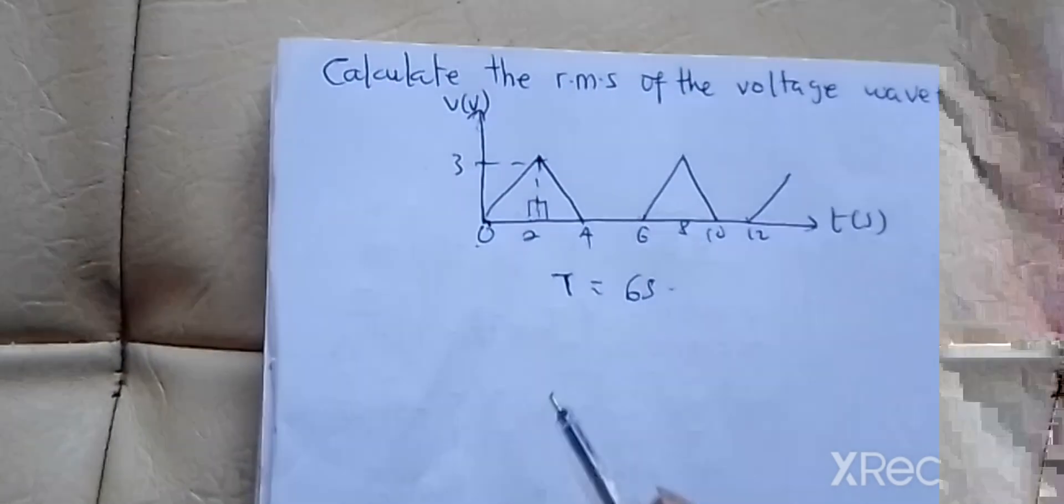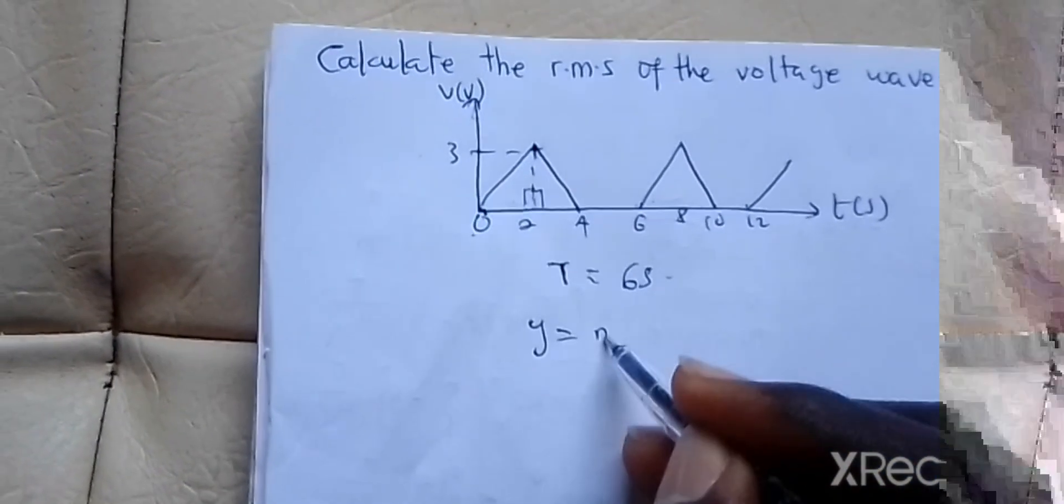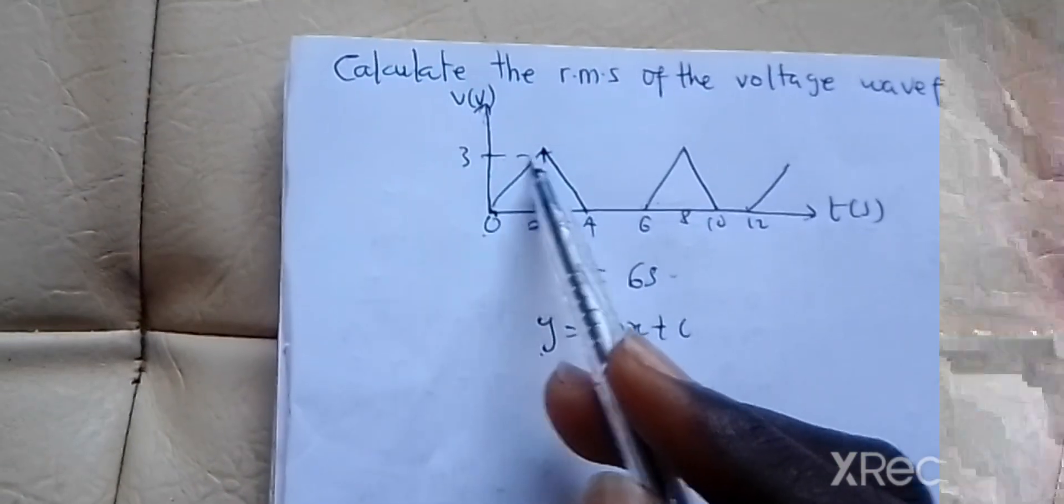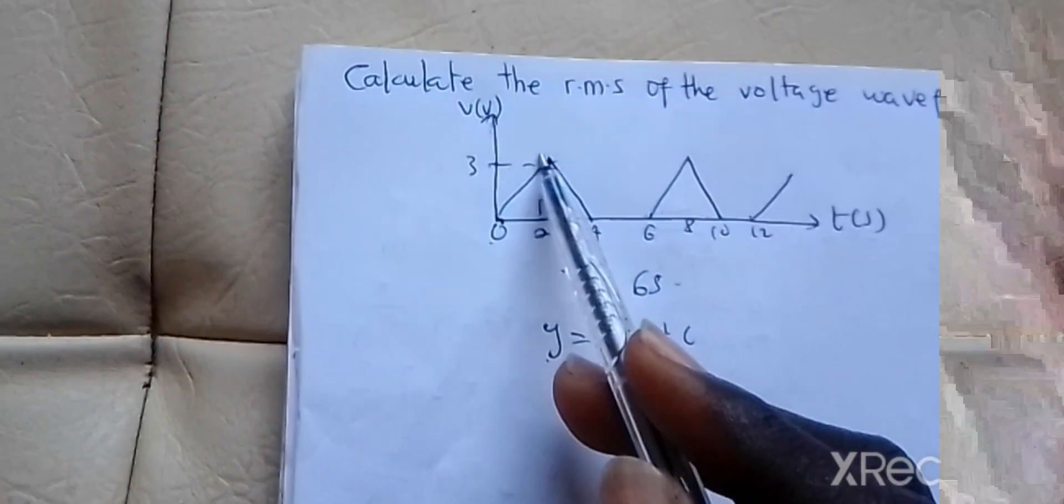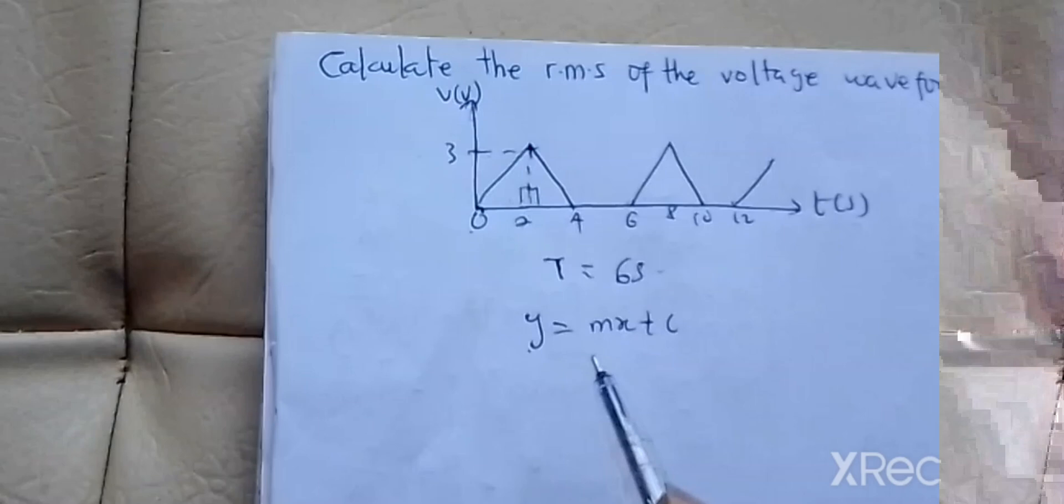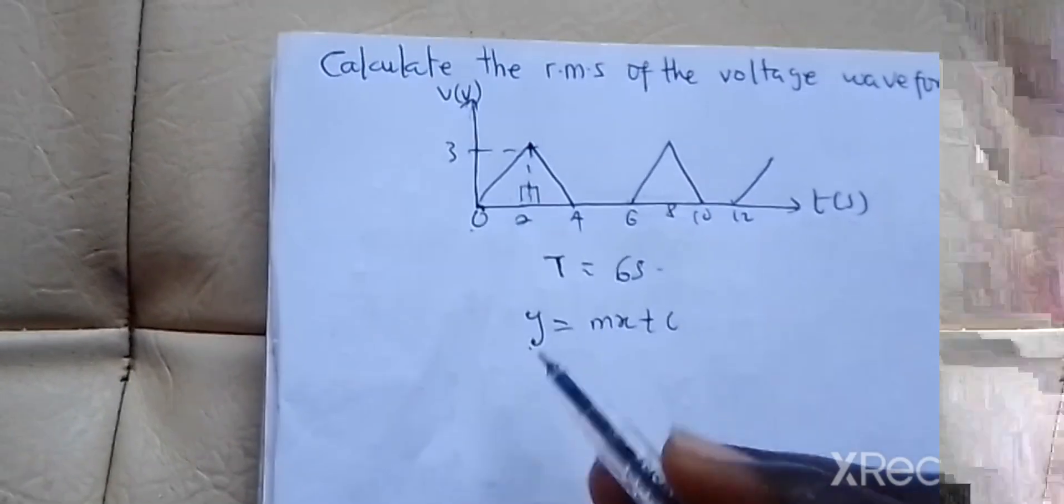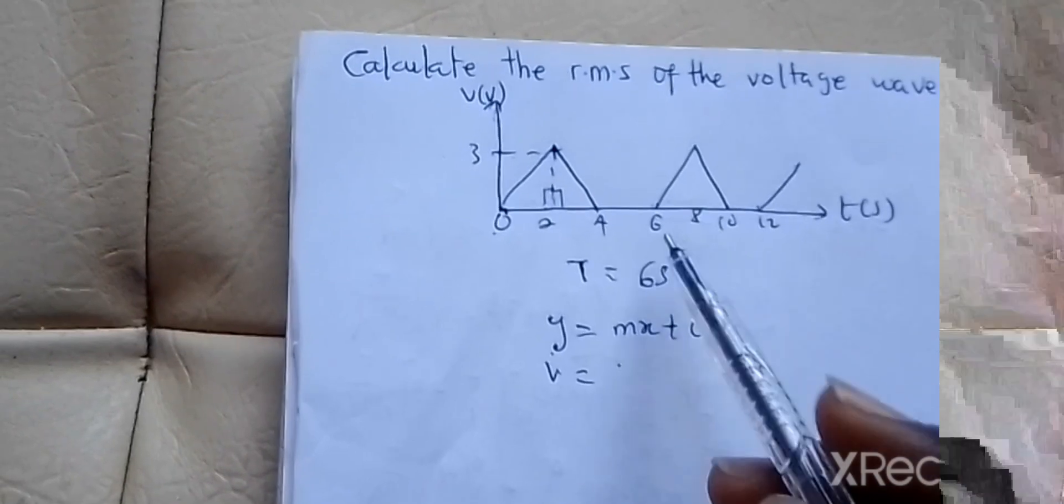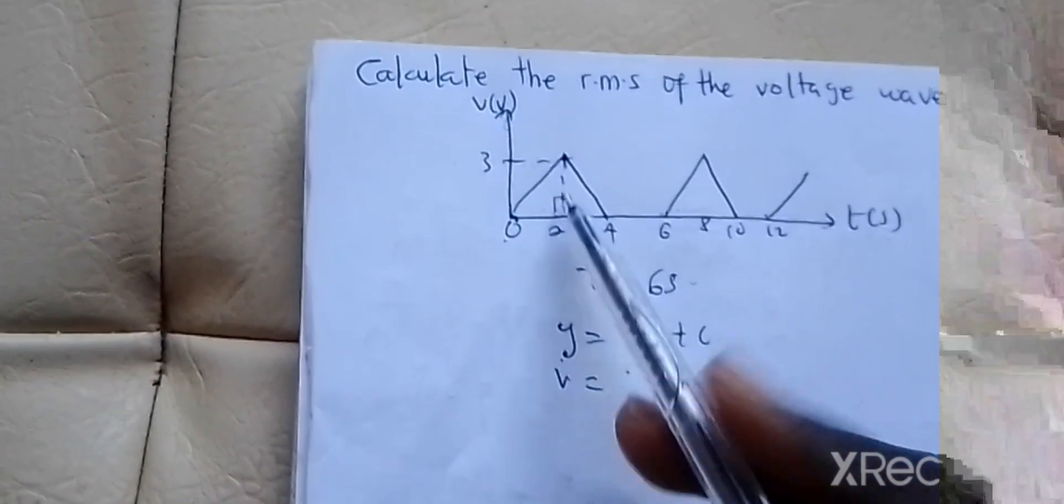Considering one of the right angle triangles, I know that y equals mx plus c, where y is the waveform function. Right now, y is our V. M is the gradient. The gradient is y over x, which is 3 minus 0 over 2 minus 0, that's 3 over 2.